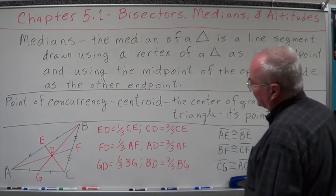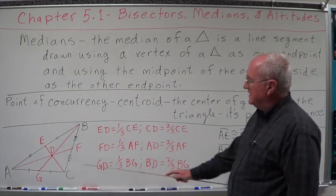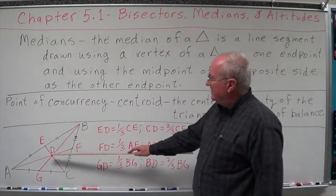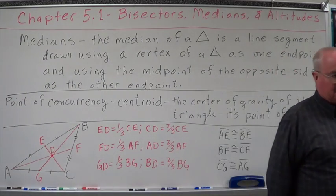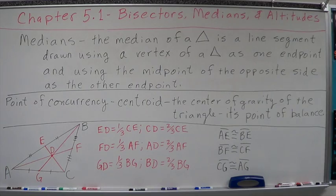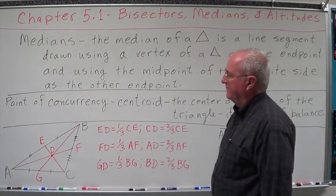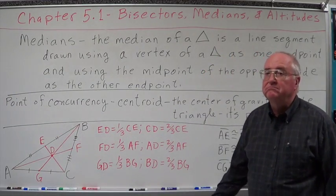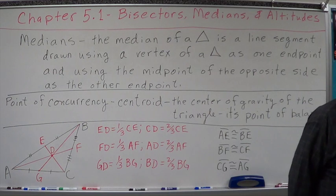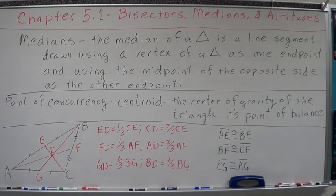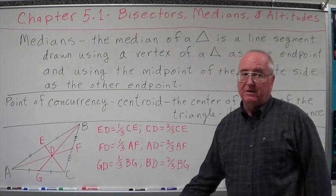Now there's another claim to fame. The centroid is one-third of the distance from the side of the triangle and two-thirds of the distance from the vertex. ED is one-third of CE. So the distance CE, ED is one-third of it. Well, what does that make CD? It must be two-thirds of it. So if EC was three, ED would be one, and CD would be two.